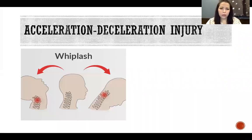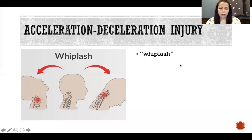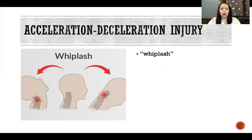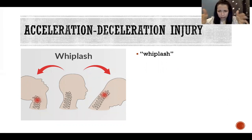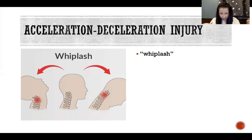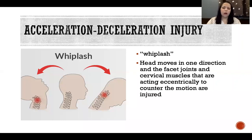Starting with acceleration-deceleration injury, that is commonly what is called whiplash. Acceleration-deceleration refers to the idea that the head is moving in the forward or anterior direction, and then we decelerate and it goes in the opposite direction. The facet joints and cervical muscles that are acting eccentrically to counter the motion are injured.